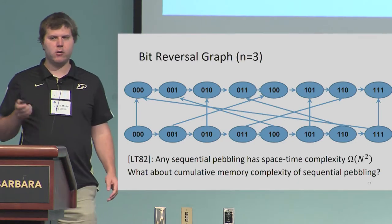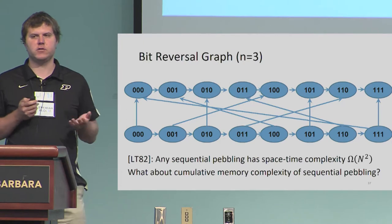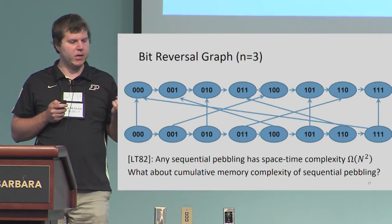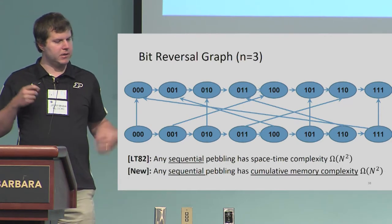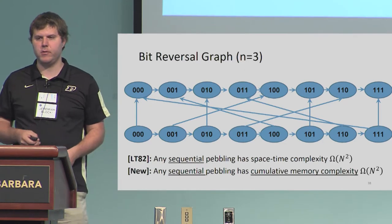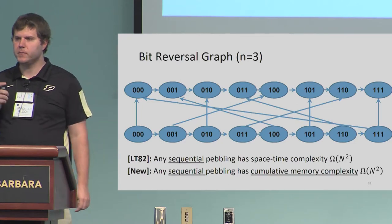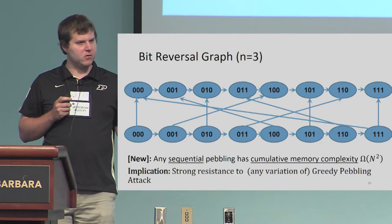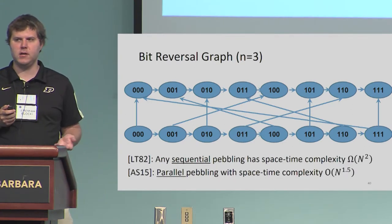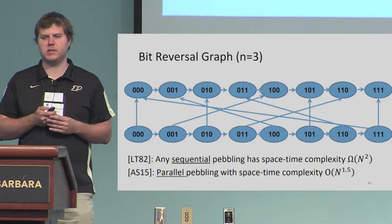This is an old graph, analyzed by Lindgrauer and Tarjan back in 1982. They showed that any sequential pebbling has space-time complexity n-squared. For this reason, it was the basis of the Katana IMHF proposal. A natural question is: what about the cumulative memory complexity of sequential pebblings? Using the right potential function, you can actually prove that the cumulative memory complexity is also n-squared — not just space-time complexity but cumulative memory complexity. However, this is only for sequential pebblings. Unfortunately, the bit-reversal graph alone is not a good candidate because Alwyn and Serbenenko in 2015 gave a parallel pebbling with space-time complexity n to the 1.5.